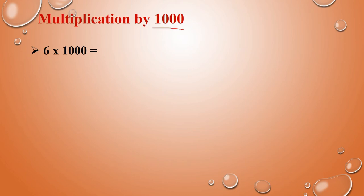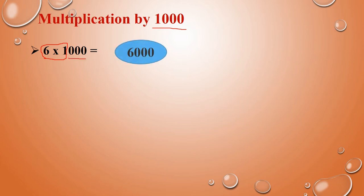Multiplication by 1000. Now we are going to multiply with 1000. First one: 6 into 1000. Same way — first the number alone you have to multiply. 6 into 1, that is 6. Here there are 3 zeros. So you have to add 3 zeros. So that is 6000.